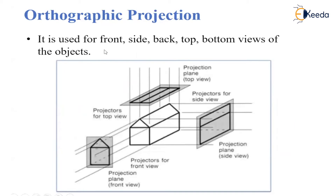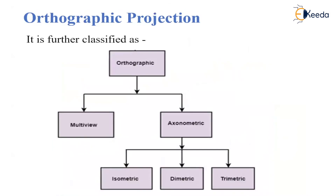In orthographic projection, we can get the front, side, back, top, and bottom view of the object. As we have seen in this figure, this is the original figure. Here we can obtain the top view, front view, side view and so on. So an accurate view of the object we can get in orthographic projection.